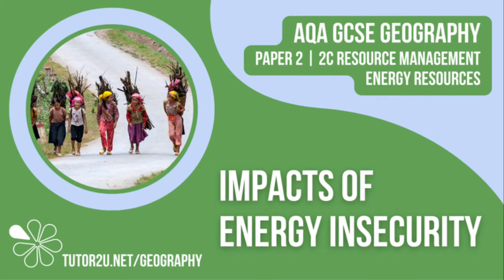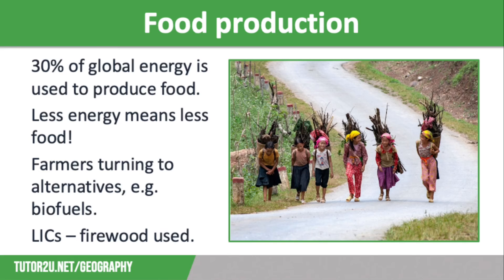Welcome to this Tutor2U topic video that looks at the impacts of energy insecurity. This is part of Paper 2, Unit C, The Challenge of Resource Management. Energy insecurity is where supplies of energy sources are unreliable — for example, they may be interrupted or prices may fluctuate, with the potential for blackouts.